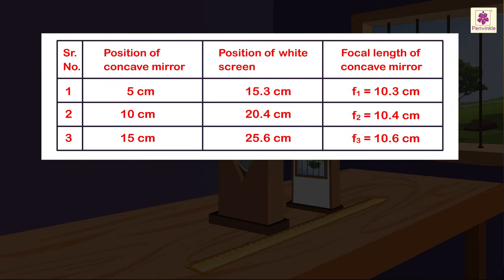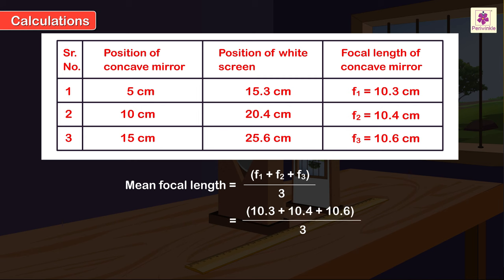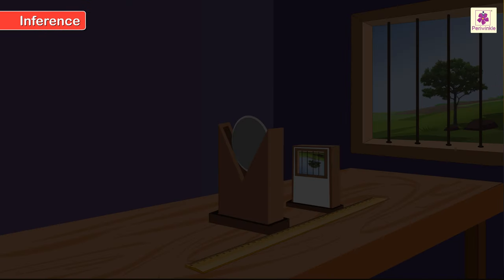Find the mean focal length of the mirror. Calculations: Mean focal length = (F1 + F2 + F3) / 3 = (10.3 + 10.4 + 10.6) / 3 = 10.43 cm. Inference: Focal length F = 10.43 cm.